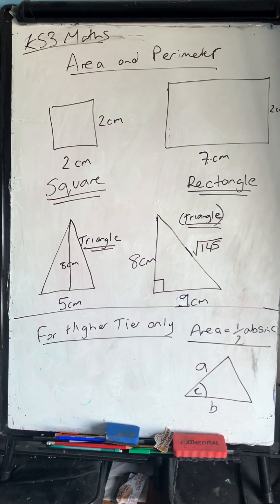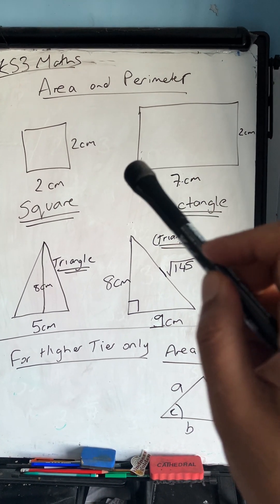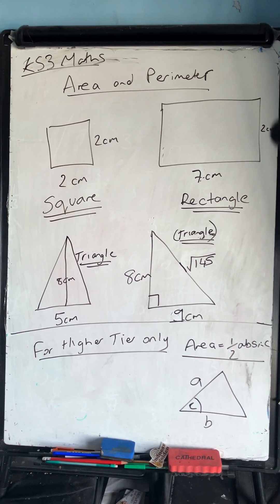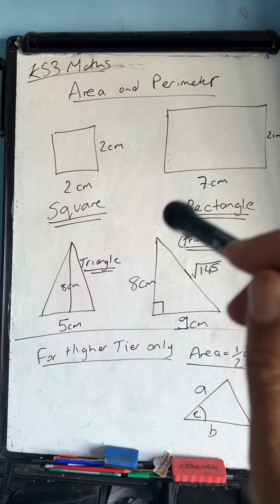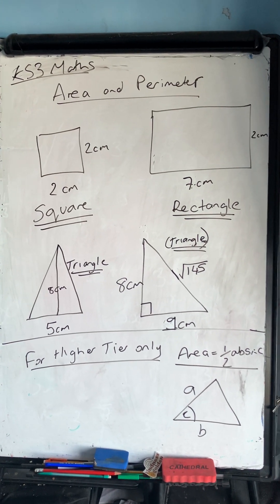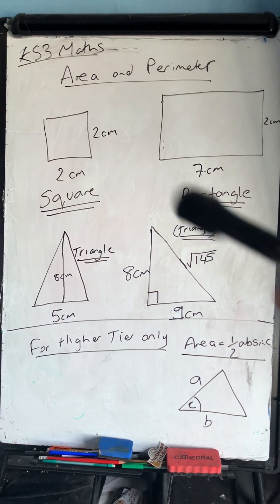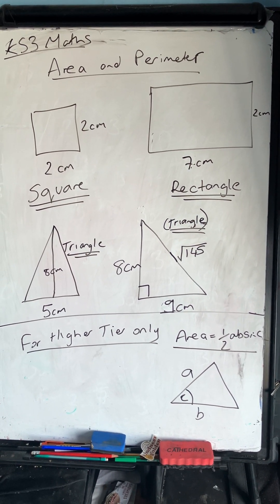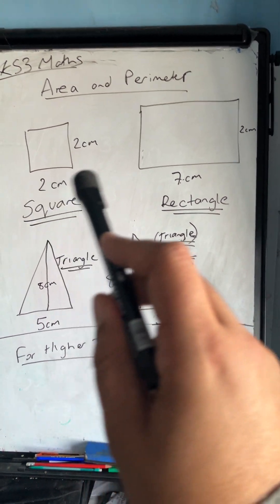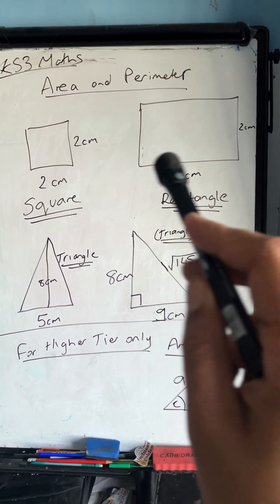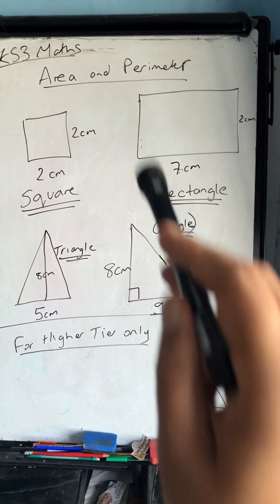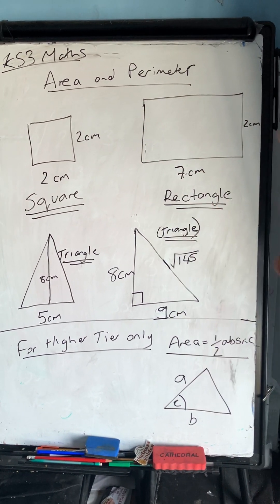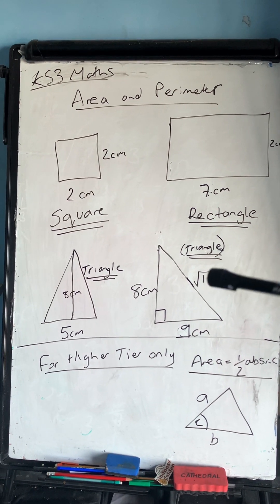Looking at a rectangle now: the length and width are different, but the angles inside are also 90 degrees — the same as a square. Angles inside a four-sided shape add up to 360 degrees: 90×4=360. To find the perimeter of the rectangle, it's 7+2+7+2: seven plus two is nine, plus seven is sixteen, plus two is 18 — so the perimeter is 18 centimetres.